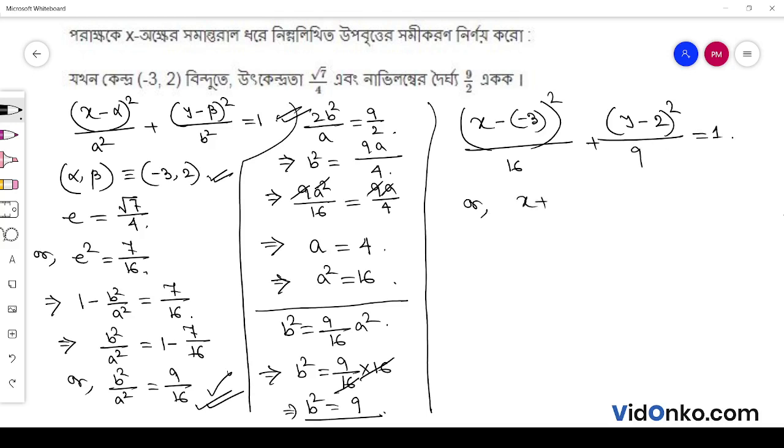So the final equation is x plus 3 whole squared by 16 plus y minus 2 whole squared by 9 is equal to 1. Thank you for watching.